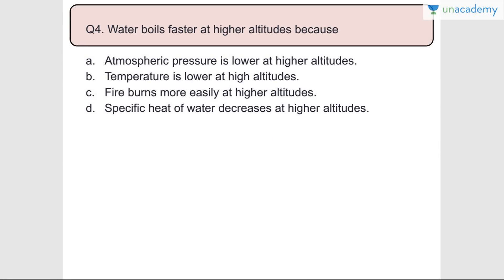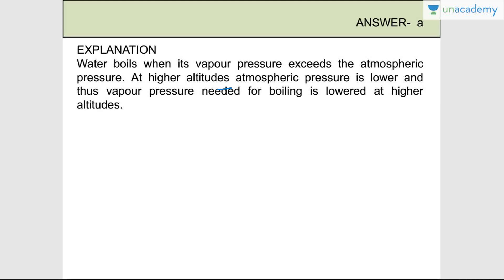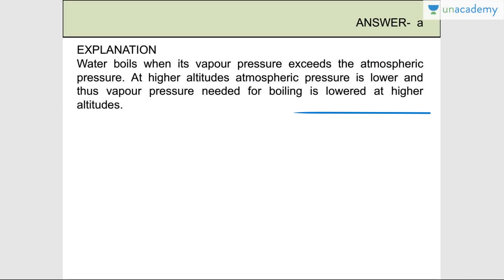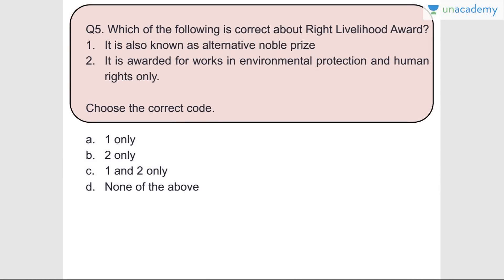Question number four: Water boils faster at higher altitudes because atmospheric pressure is lower at higher altitudes, so water needs less temperature to boil. Water boils when its vapor pressure exceeds the atmospheric pressure. At higher altitudes, atmospheric pressure is lower and thus the vapor pressure needed for boiling is also lower, making water boil faster at higher altitudes.